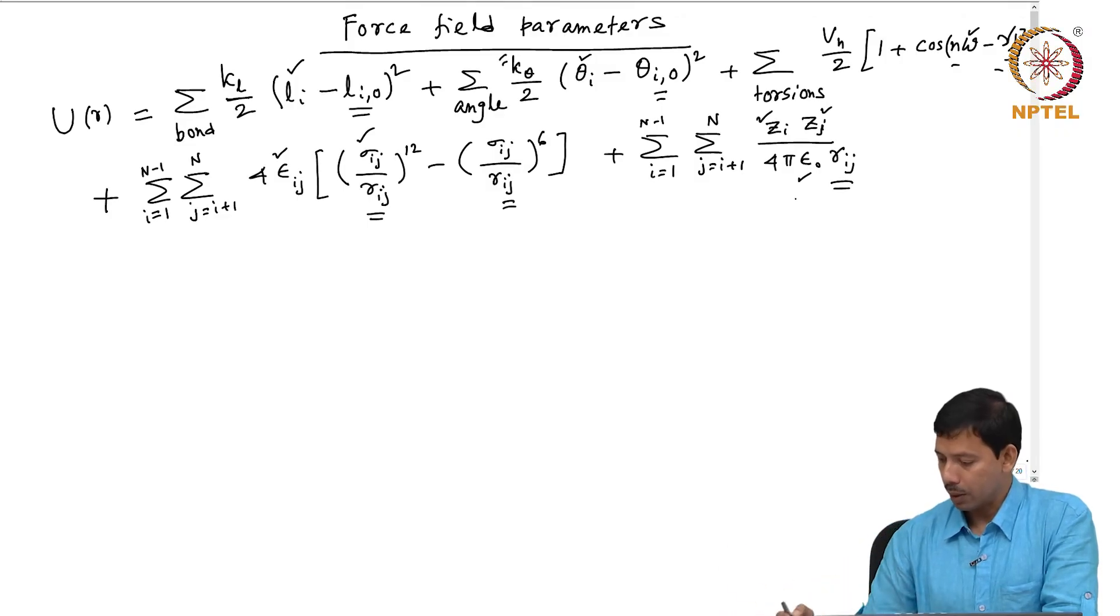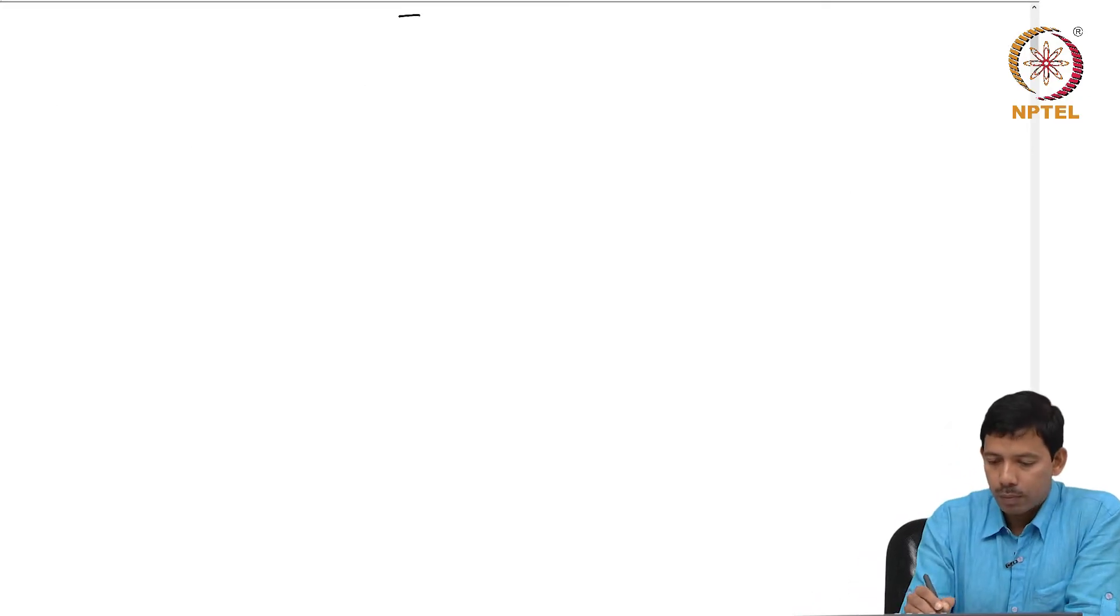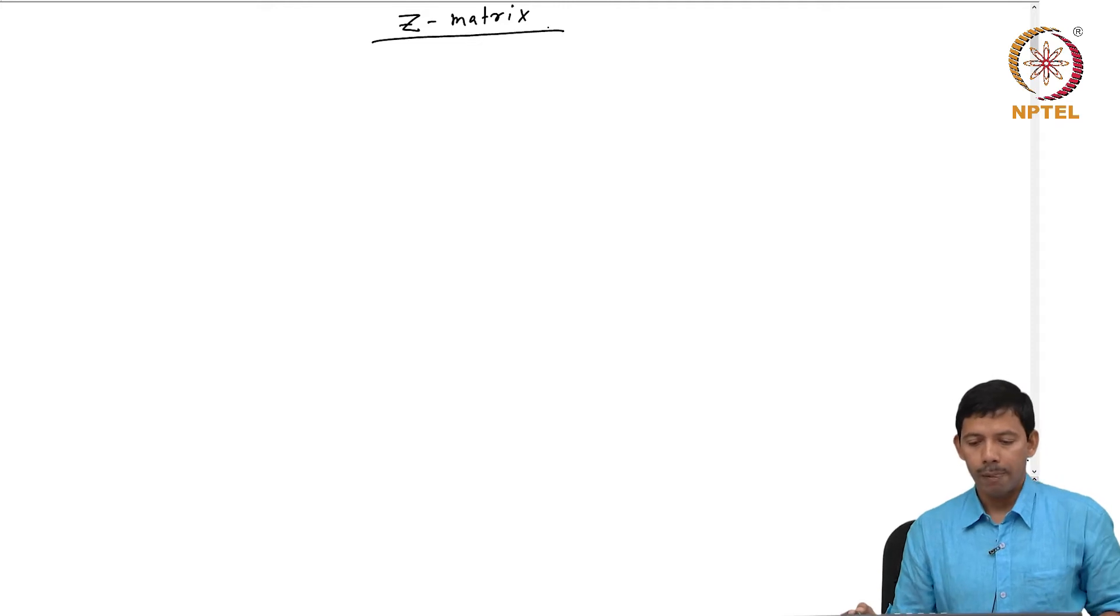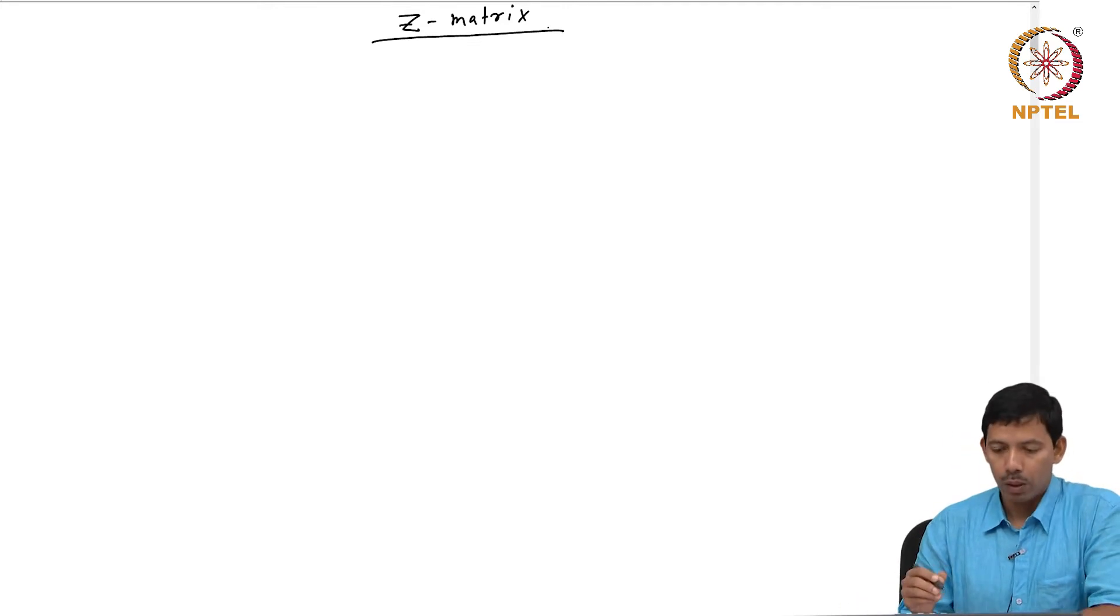Now, what is Z matrix? Z matrix, as I said, basically writes the internal coordinates of a molecule in a more tractable form.